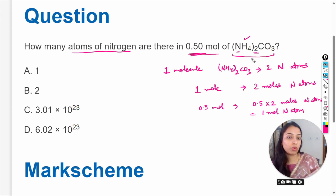So 0.5 mole of these molecules will contain one mole nitrogen atom. And we know that one mole is equal to 6.02 × 10^23. This number is equal to one mole, so 0.5 mole of these molecules will contain 6.02 × 10^23 nitrogen atoms.